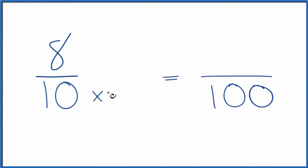So we could say 10 times 10, that equals 100. But we also need to multiply the numerator here by 10 as well. That's because 10 over 10, that's just one. We're just multiplying by one. We're finding an equivalent fraction.